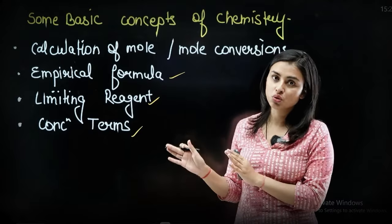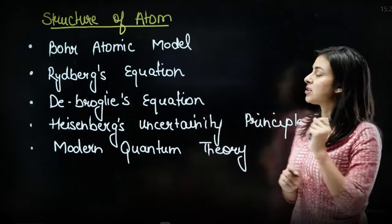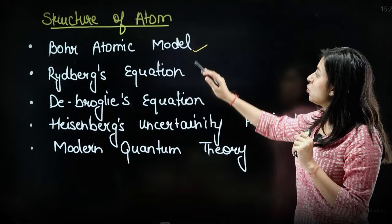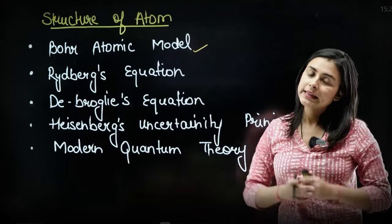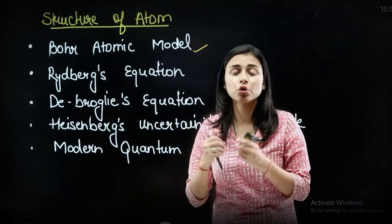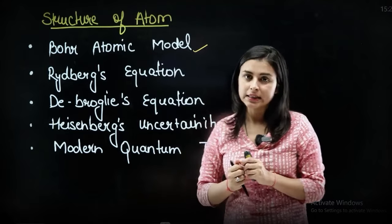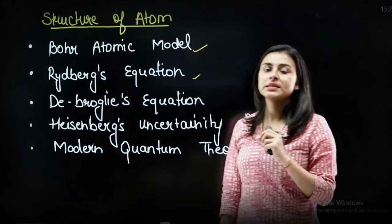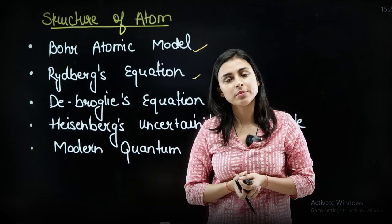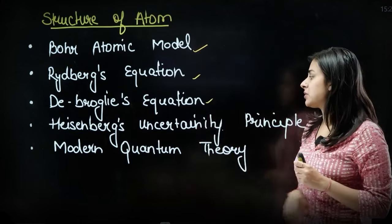Next, if we talk about the chapter, then structure of atom comes. In the structure of atom, my dear students, the most important topic is the Bohr atomic model. From the Bohr atomic model, directly formula-based questions: radius, Bohr radius, Bohr velocity, all these things can be asked. Next is Rydberg's equation, what was the transition between that. They were asked many times. Next is your De Broglie equation. These questions come from Heisenberg's uncertainty principle.